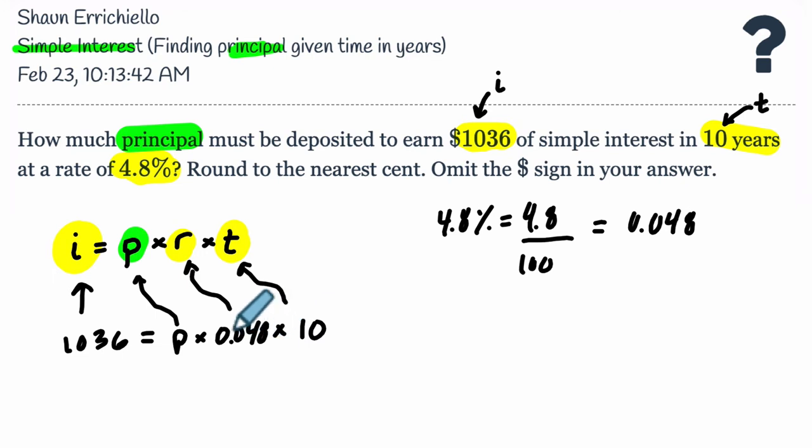Now, to do that, you can multiply 0.048 by 10 and then divide that on both sides, or you can just restructure this equation. In other words, get P by itself. To do that, you have to divide by the product of R and T, whatever that is.